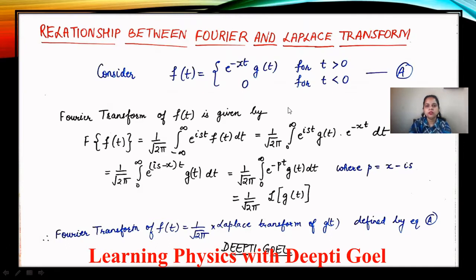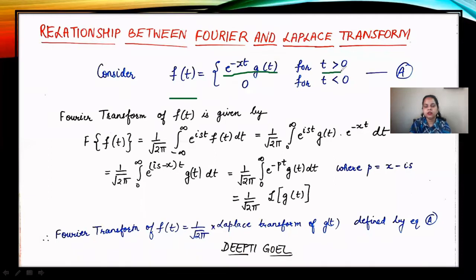The function considered is f(t) = e to the power minus xt times g(t) for t greater than 0, and it tends to 0 when t is less than 0. We apply the Fourier transform on this function f(t). The Fourier transform of f(t) is 1 by root 2 pi, integral from minus infinity to infinity, e to the power iota s t, times f(t) dt. This is the basic definition of the Fourier transform.